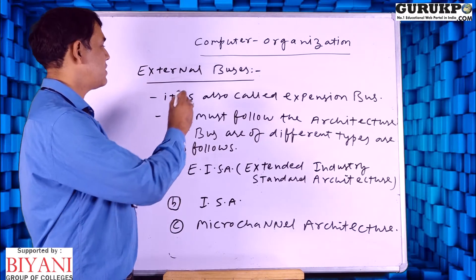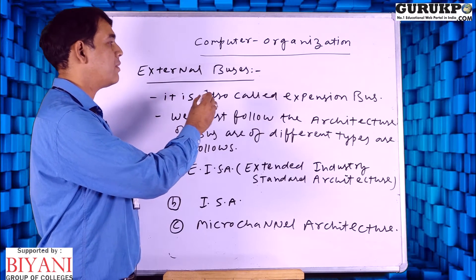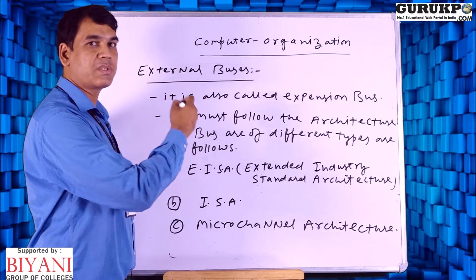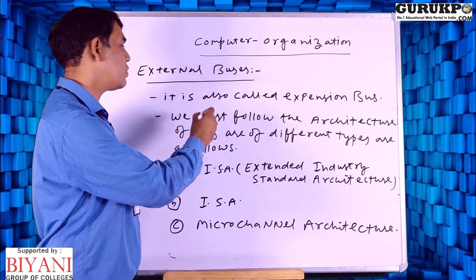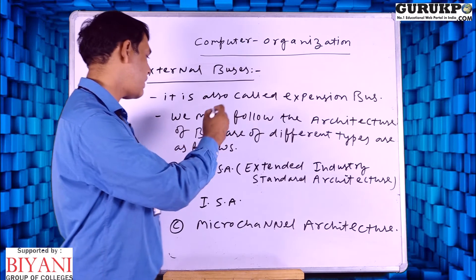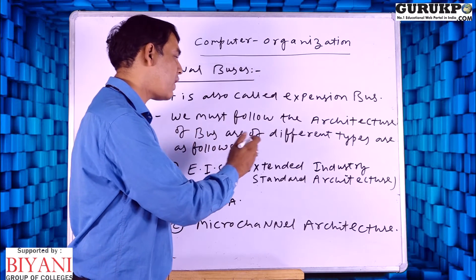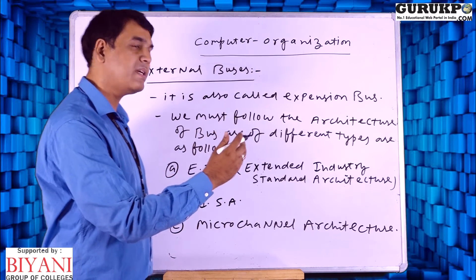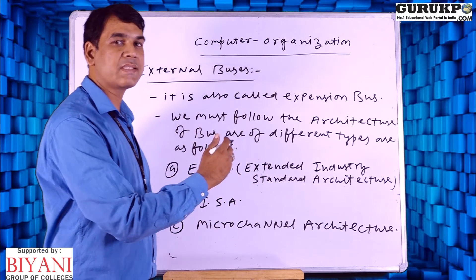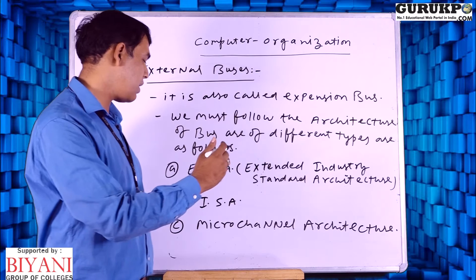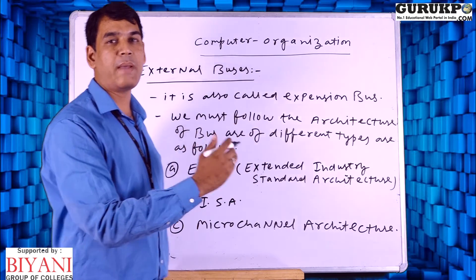Let us discuss about the external buses. External buses are also defined as expansion buses — that is another name for external buses. We have different types of bus architecture. First, we define EISA, which stands for Extended Industry Standard Architecture. Second is ISA, which is called Industry Standard Architecture. Third is Micro Channel Architecture, which is called MCA.